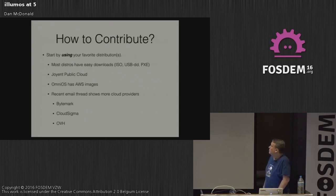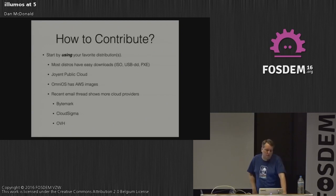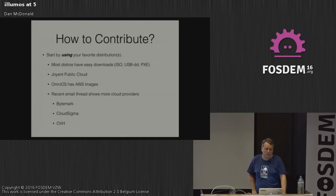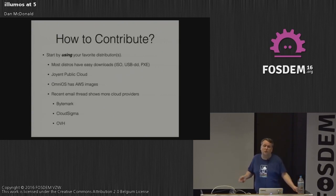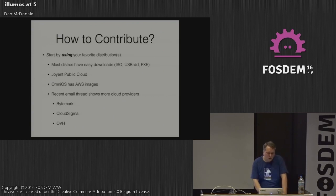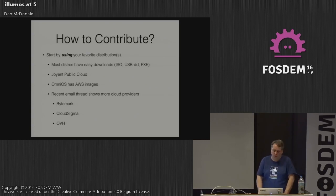If you want to contribute, start by using your favorite distribution. Most of us have easy downloads as ISO, PXE boot, or USB that you can DD onto a USB stick. I'm handing out OmniOS installers at the Illumos booth today. OmniOS also has AWS images if you want to try it in the cloud, or you can grab a Joyent SmartMachine. Recent email threads have shown that ByteMark, CloudSigma, and OVH will all gladly support Illumos for you.